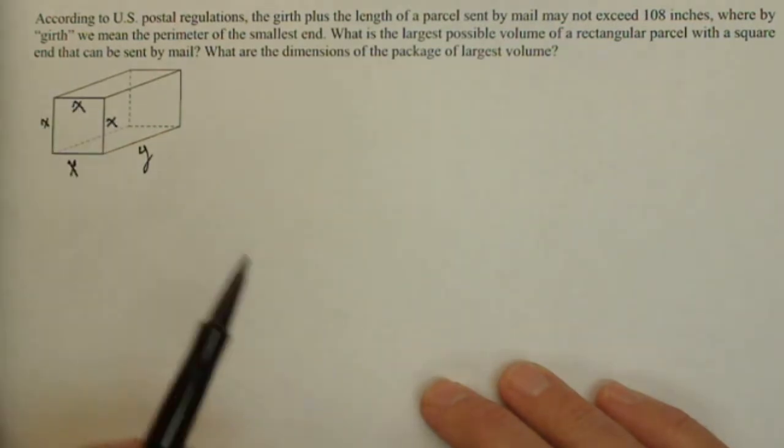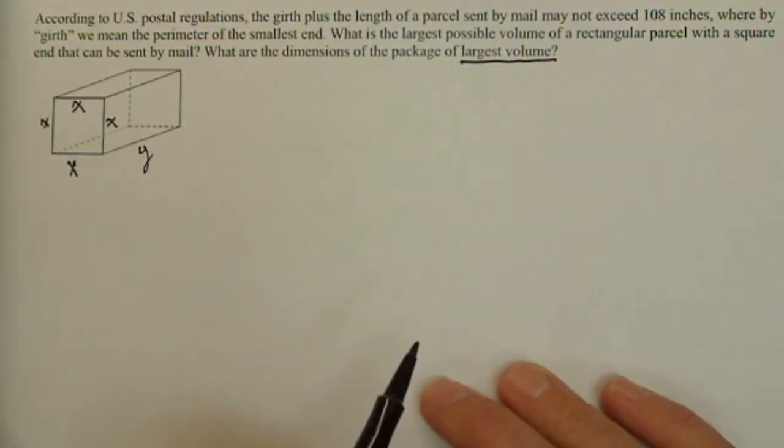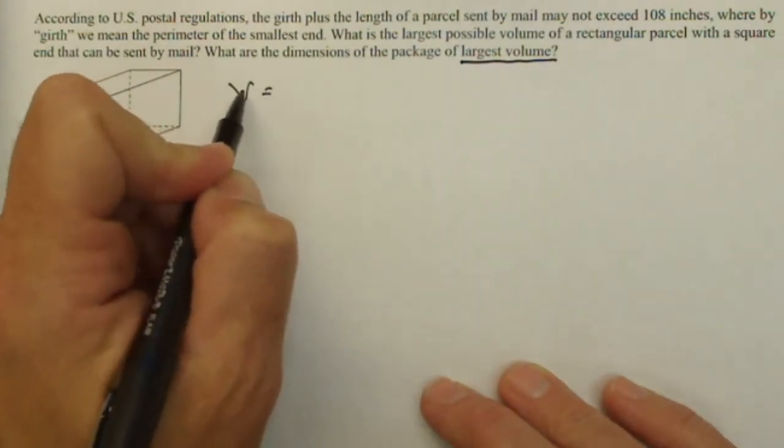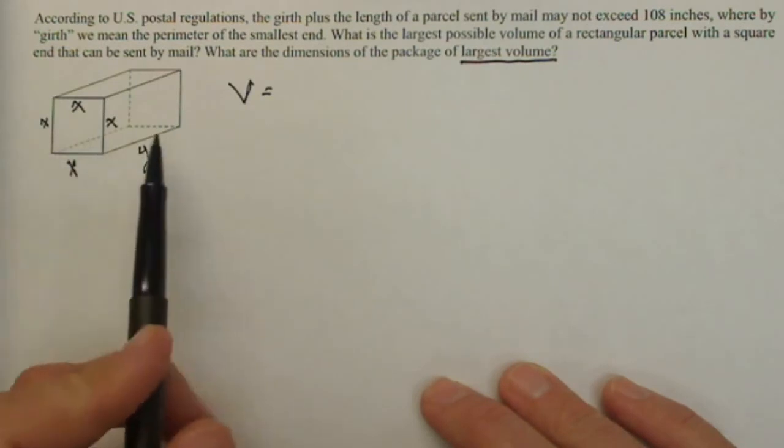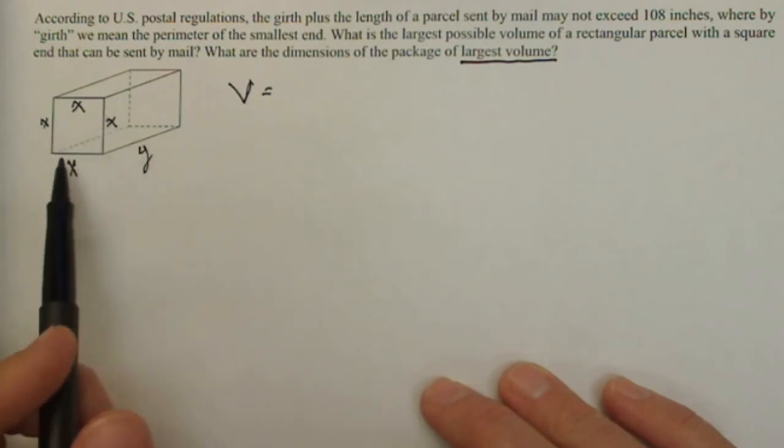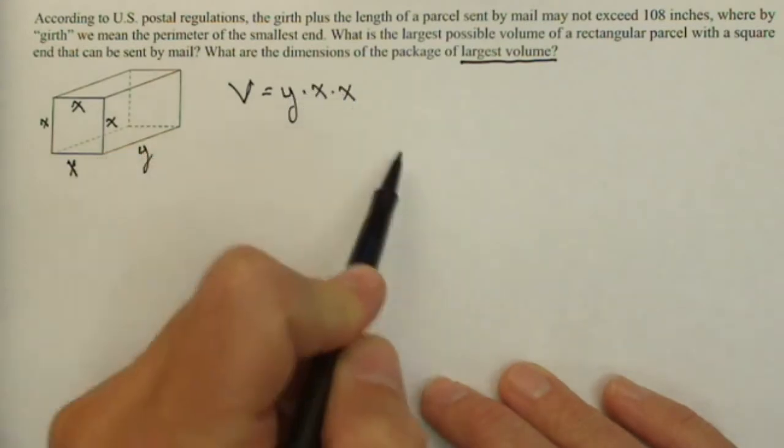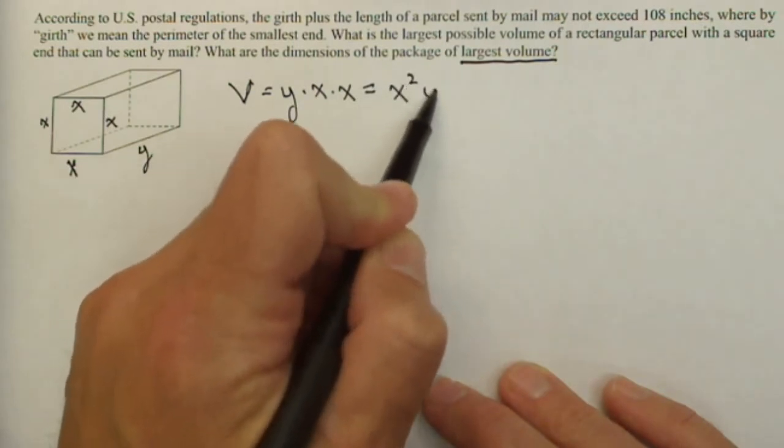Now let's think about what it is we're trying to optimize. We're trying to optimize the volume. So in getting a function for volume, it's going to be length times width times height, so y times x times x, or x squared y.